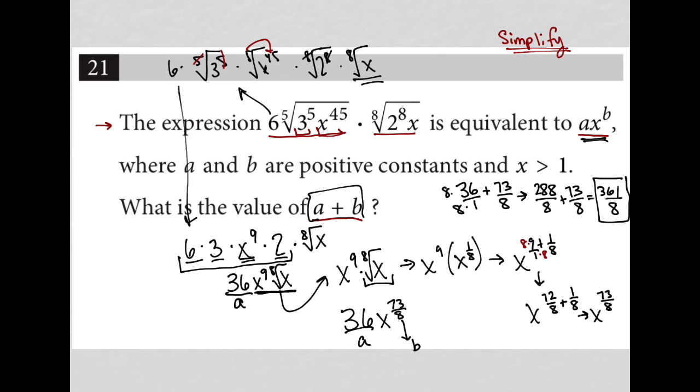361 divided by 8 is equal to 45.125. But because we only have four spaces for our plug-in, I'm going to round it to 45.13. There is our answer.